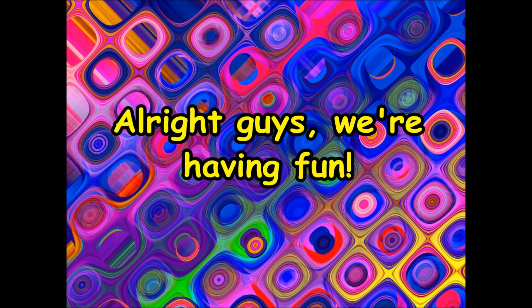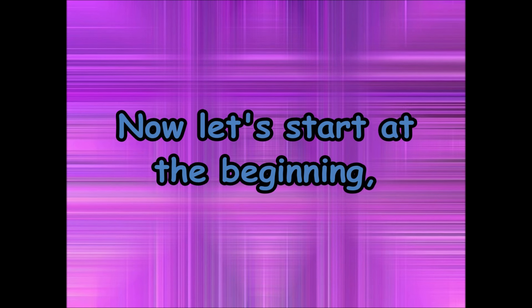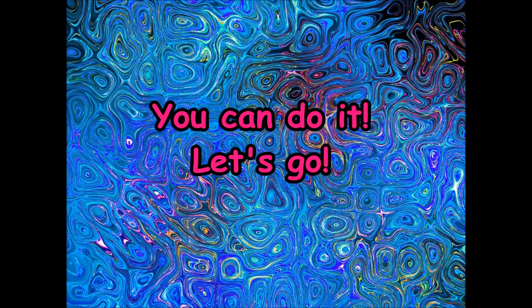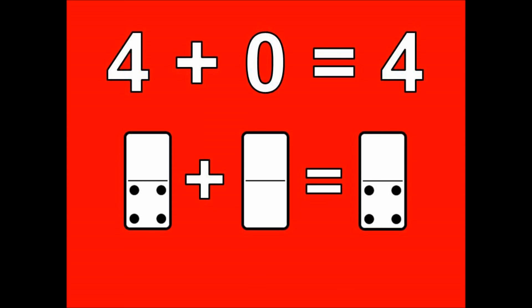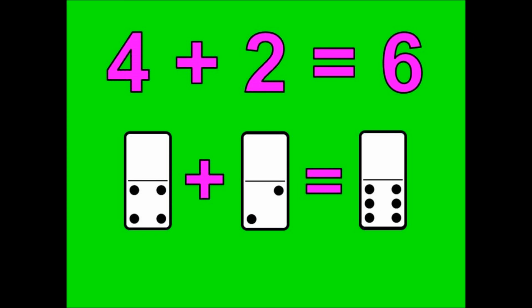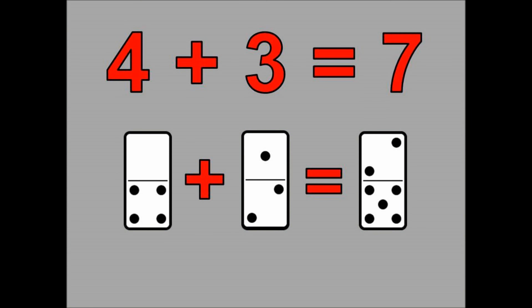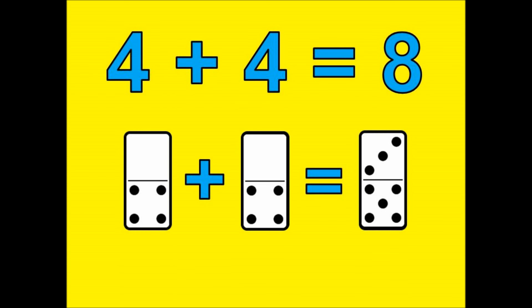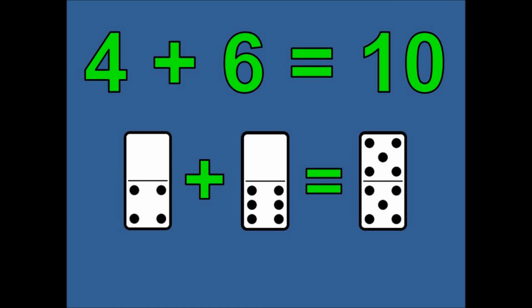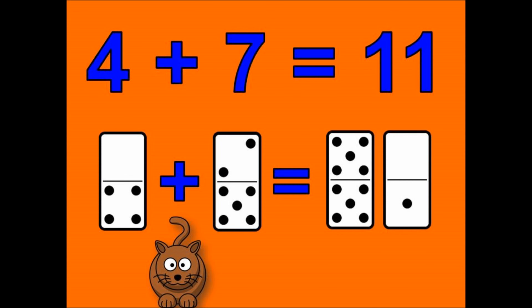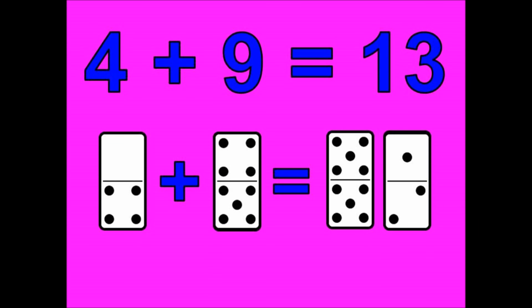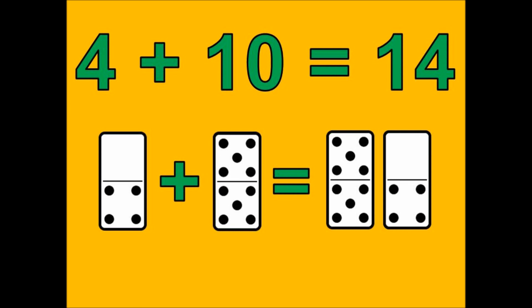Alright guys, we're having fun. Now let's start at the beginning, go all the way up, and all the way back down. You can do it. Let's go. Four plus zero is four. Four plus one is five. Four plus two is six. Four plus three is seven. Four plus four is eight. Four plus five is nine. Four plus six is ten. Four plus seven is eleven. Four plus eight is twelve. Four plus nine is thirteen. Four plus ten is fourteen.